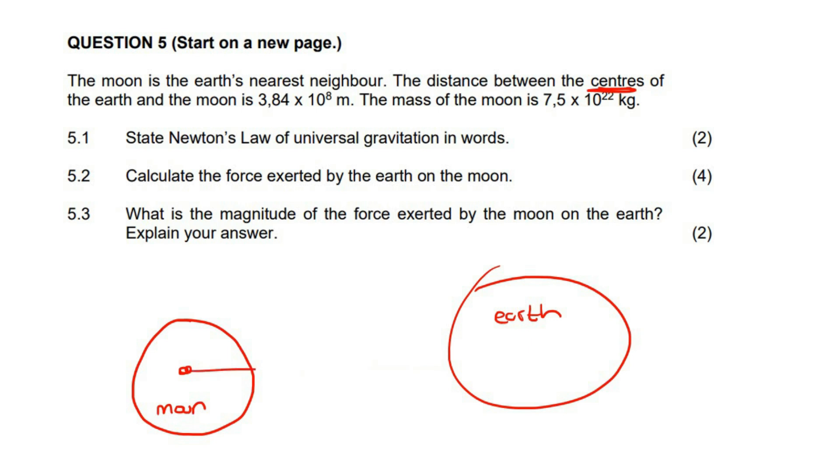So the distance between the centers of the Earth and the moon is this many meters, and the mass of the moon is 7.5 times 10 to the 22 kilos. Did you know that on your formula sheet, they do give you the mass and the radius of the Earth? That is on your formula sheet.